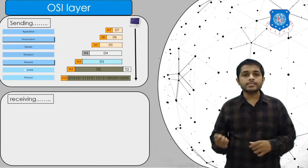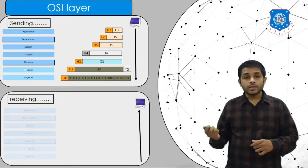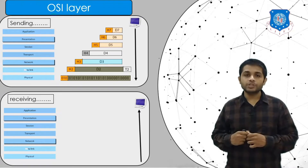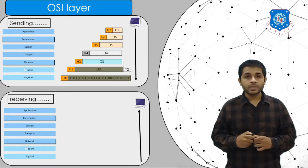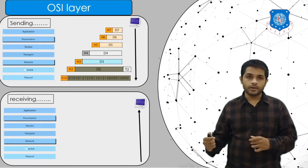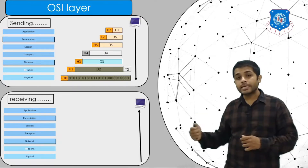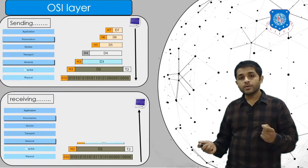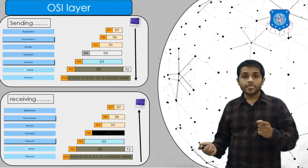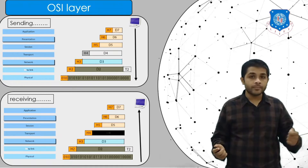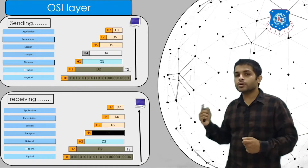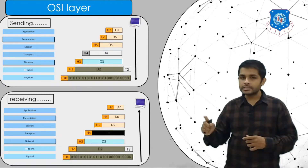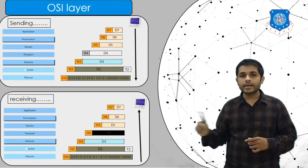The same procedure will be followed at the receiver side too. When the receiver is receiving data, it will also pass through all the layers but the direction will be changed. When the sender is sending data, it flows from the application layer down to the physical layer. But when the receiver is receiving data, it passes from the physical layer up to the application layer. At each layer, the corresponding header will be removed. Notice that the header added at a particular layer on the sending side will be removed at that same layer only — for example, H7 added at the application layer on the sending side will be removed at the application layer on the receiving side.